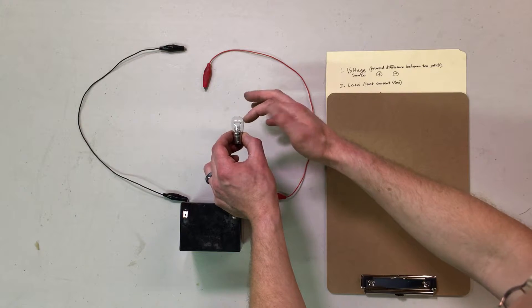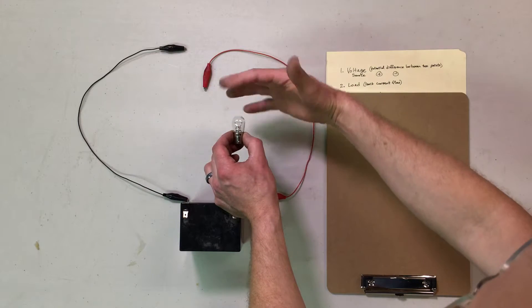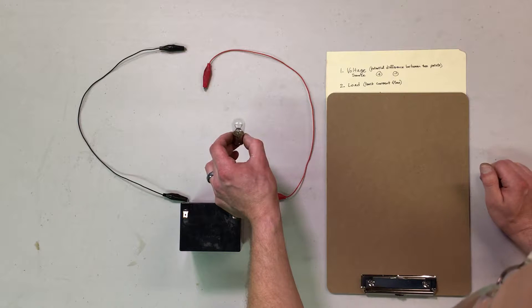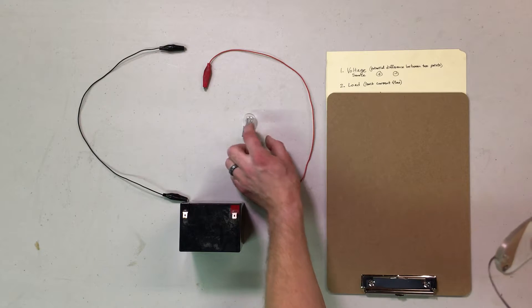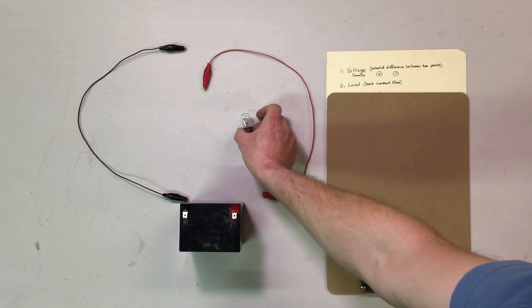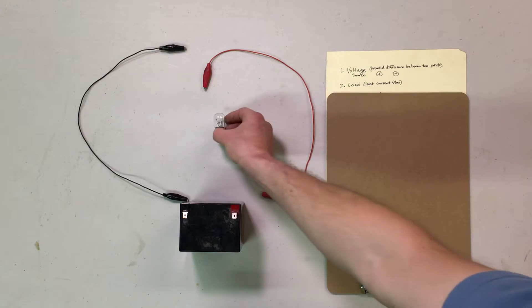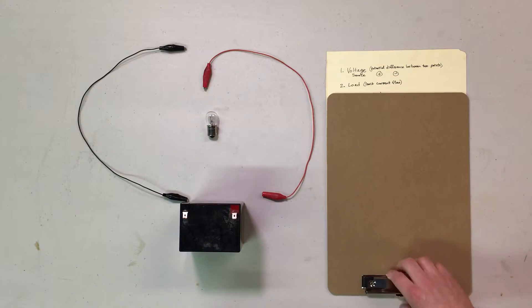Therefore, it heats up and gets hot. And in fact, so hot that it glows brightly. Thank you, Thomas Edison, for experimenting a thousand times to give us the right filament type. So that's our load. You need a load to limit the flow of current.